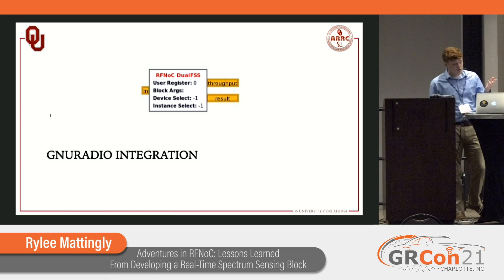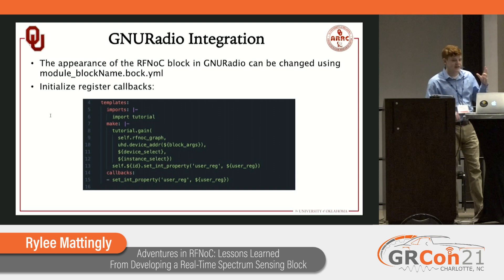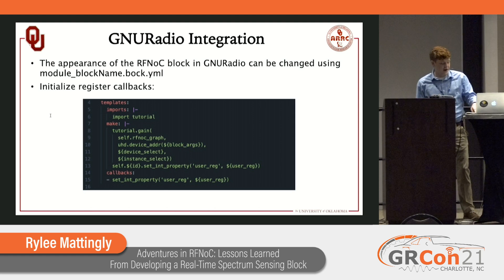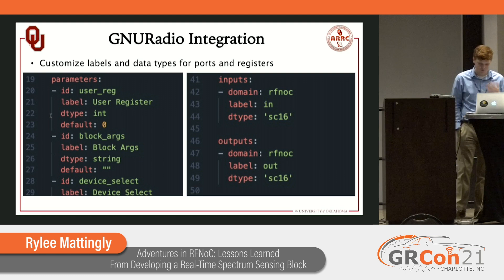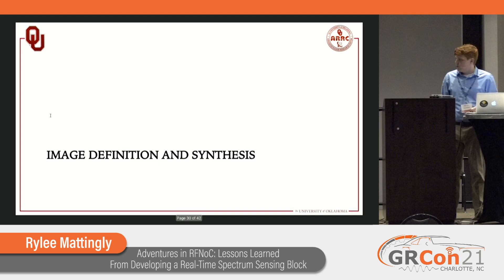Now we can look at the GNU Radio integration. We want to see our block in GNU Radio with a nice usable block. This is where the .block.yaml file comes in. In the top section, we include our register callbacks — there's example in the default file to follow. We can customize the labels for each input and output to be more helpful than n1, n2, out1, out2. For each of those inputs and outputs, the domain should be rfnoc and the data type should be sc16, unless you're doing something really unusual.